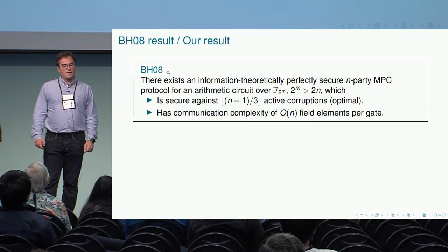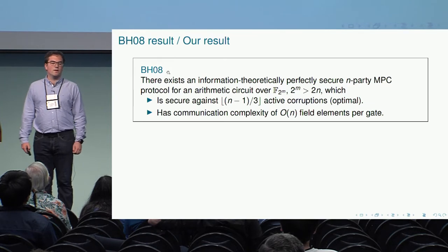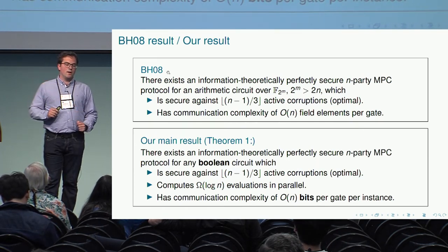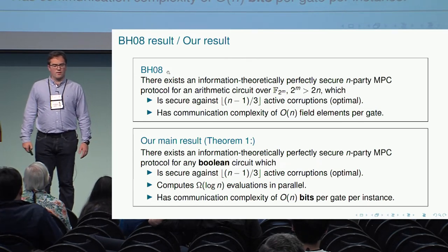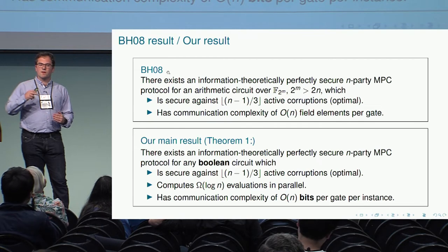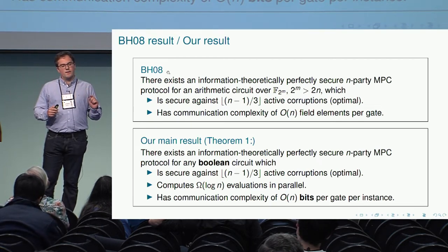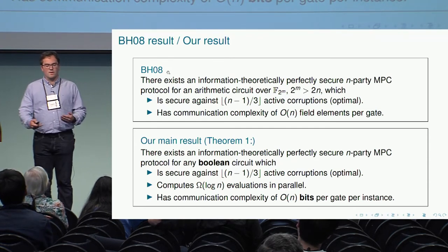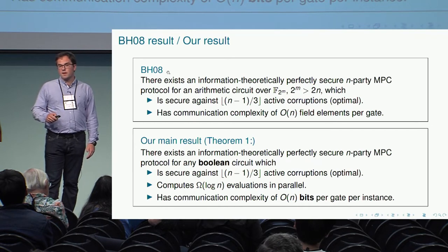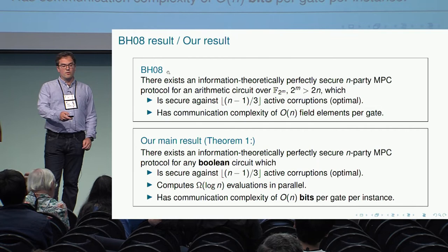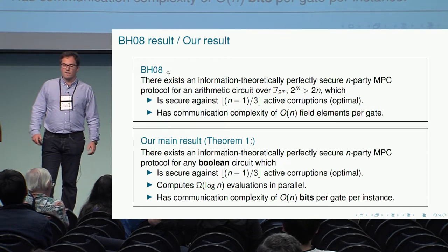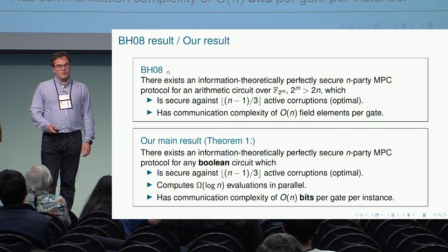The protocol has the restriction that the field must have at least 2n elements. What we show is that we can use that protocol to compute log n evaluations of a Boolean circuit. If we do that without increasing the communication complexity too much, then counting how much information is being sent, the communication complexity is linear bits per gate in each instance. So we are able to remove the limitation on the size of the field, at the cost of having to compute log n evaluations of this circuit. That is the main result.